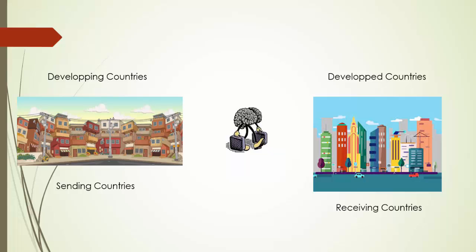Those intellectual, highly qualified, and highly skilled people, when they leave their countries — usually developing countries — they leave towards developed countries. You can see the difference between the two when you look at the pictures: developing countries on the left, developed countries on the right. In this case, developing countries become sending countries, or in Arabic, dual mursila. And developed countries become receiving countries, or in Arabic, dual mustaqbila, because they receive those skillful, intellectual, highly qualified people and make use of their knowledge, skills, and qualifications for their own benefit.